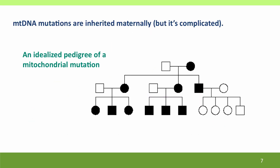An idealized pedigree of a mitochondrial mutation with strictly maternal inheritance would look like this: the grandmother has mutant mitochondria, she passes it on to all three of her children, her daughters pass it on to all of their children, but her sons don't pass it on at all. However, this picture is complicated by another feature of mitochondrial mutations in mitochondrial DNA — the problem of heteroplasmy.